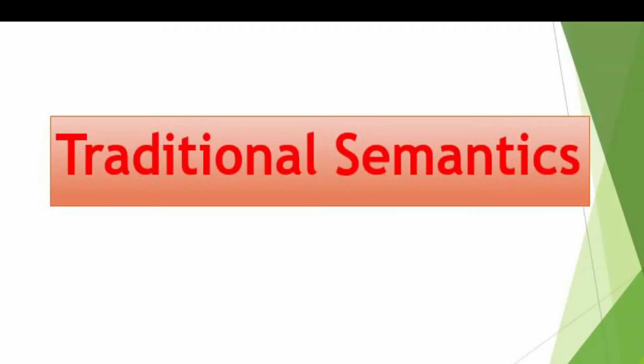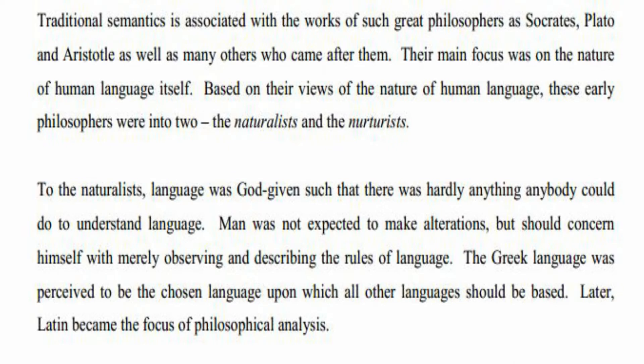The first one is traditional semantics. Traditional semantics is associated with works of great philosophers such as Socrates, Plato and Aristotle, as well as many other philosophers who came after them and who were their followers. Their main focus was on the nature of human language itself and they were philologists, analyzing the language of their times.